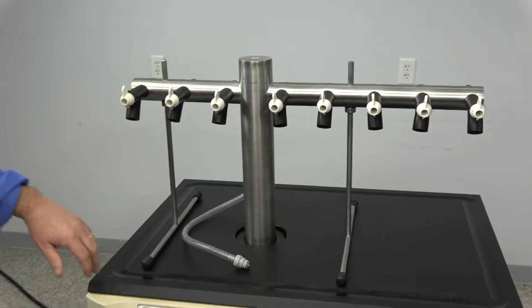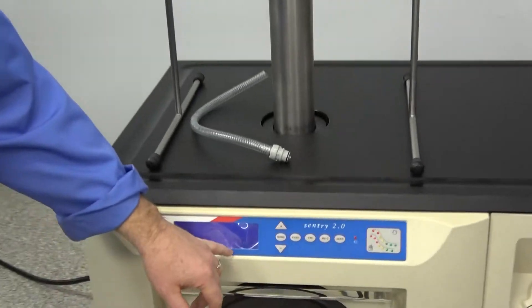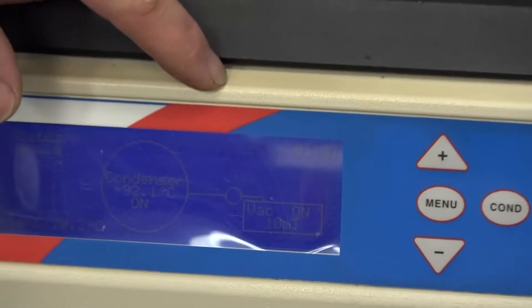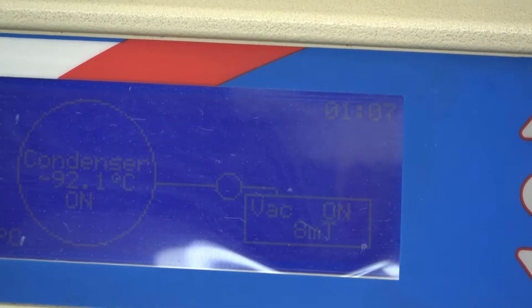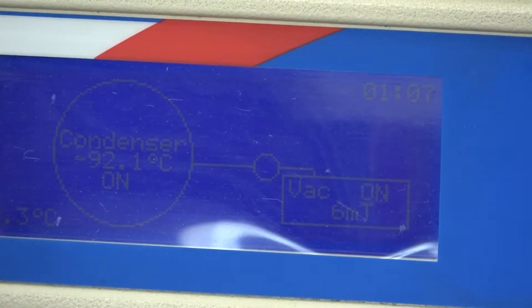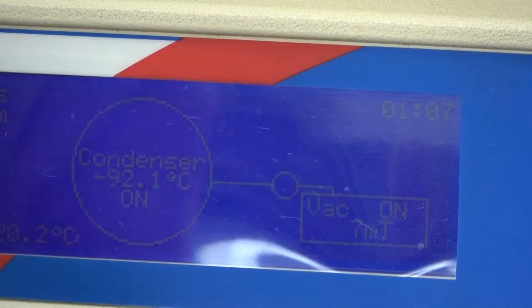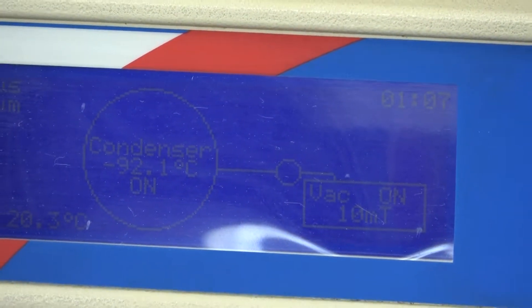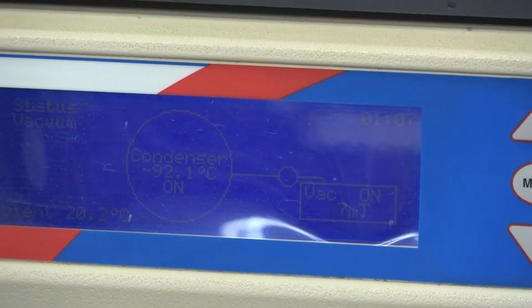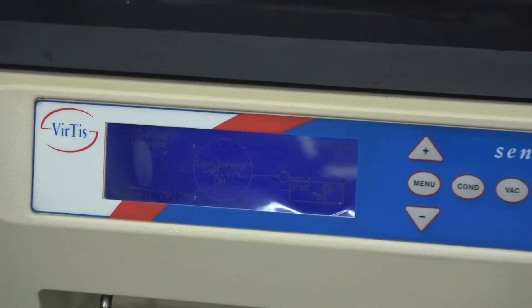But I just want to point out here, we're pulling down well below the specs. You probably can't see the screen too well, but it's bouncing around six and seven millitorr here. We're showing about a negative 92 Celsius on the screen as far as the cooling temperatures. Like I said, just a great running machine.